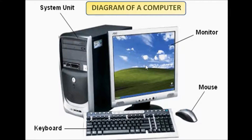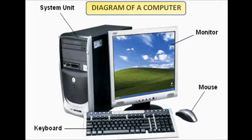Next is the system unit — S-Y-S-T-E-M U-N-I-T — or it is also called CPU, central processing unit. CPU is the main hardware component of a computer, and all the processing is done inside the CPU.